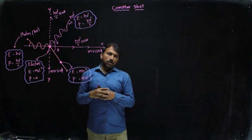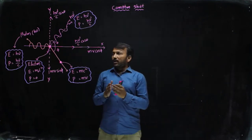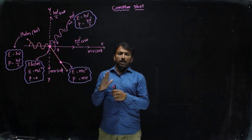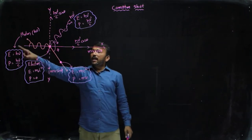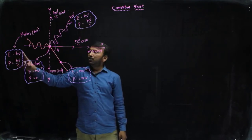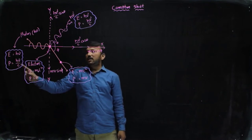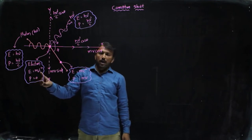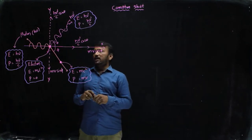This collision is an elastic collision. In an elastic collision, both energy and momentum are conserved. We will examine the energy and momentum of the photon and electron before and after the collision. The energy of the photon before collision is hν and the momentum of the photon before collision is hν/c. The rest mass energy of the electron is m₀c², and the momentum of the electron before collision is zero because it is at rest. After collision, the energy of the photon is hν′ and its momentum is hν′/c. The energy of the recoiled electron after collision is mc² and its momentum is mv.